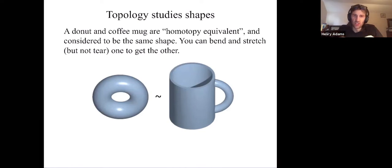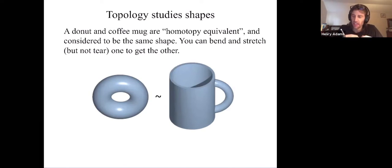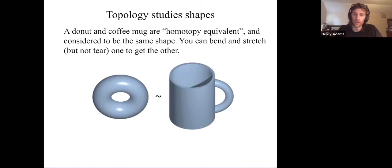The overused joke is that a donut and a coffee mug are indistinguishable to a topologist — they can't see the difference. That's because a topologist considers shape up to a notion of invariance. Two shapes are considered to be the same if you could stretch one or bend one to get the other. There are nice animations on Wikipedia of a donut deforming into a coffee mug.